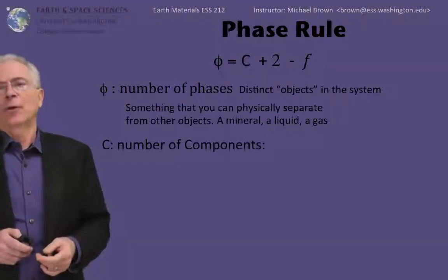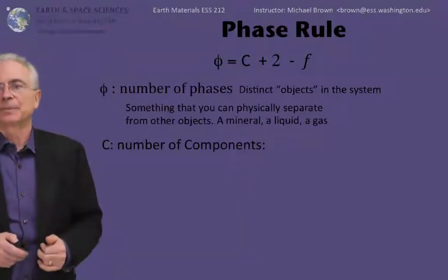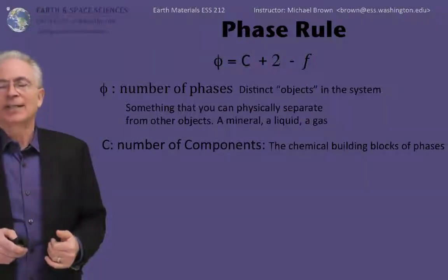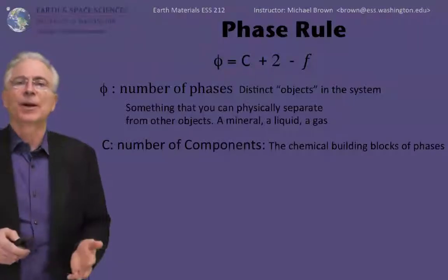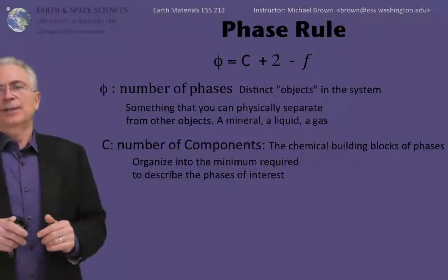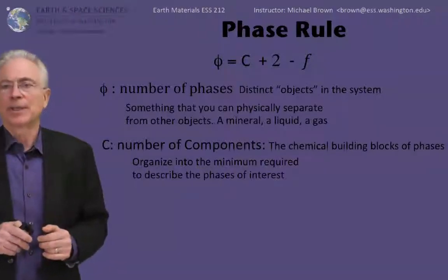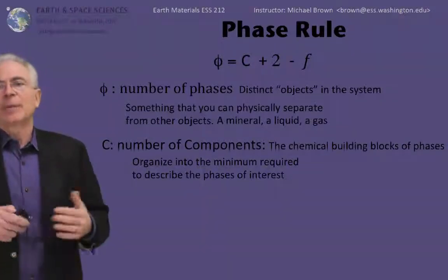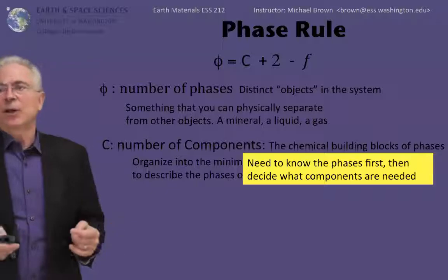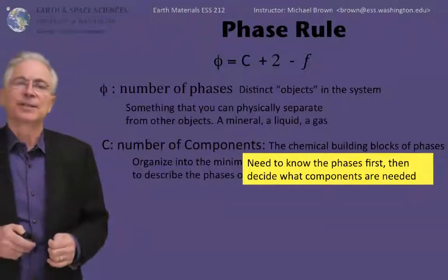Now C stands for number of chemical components. What we have to do is decide what chemical building blocks are necessary to build the phases we are looking at. So the trick is to organize the chemical components into the minimum number of chemical components that are necessary to describe everything that's of interest in your system. This means we need to know what phases we're considering, and then we decide what components we're going to build those phases out of.